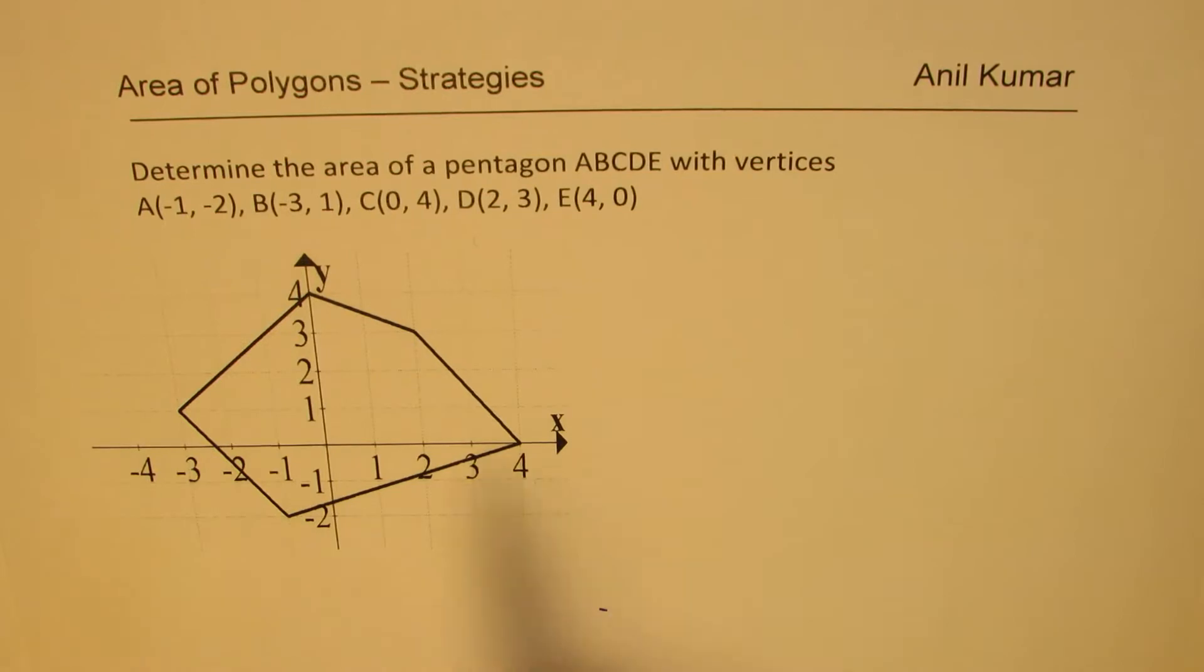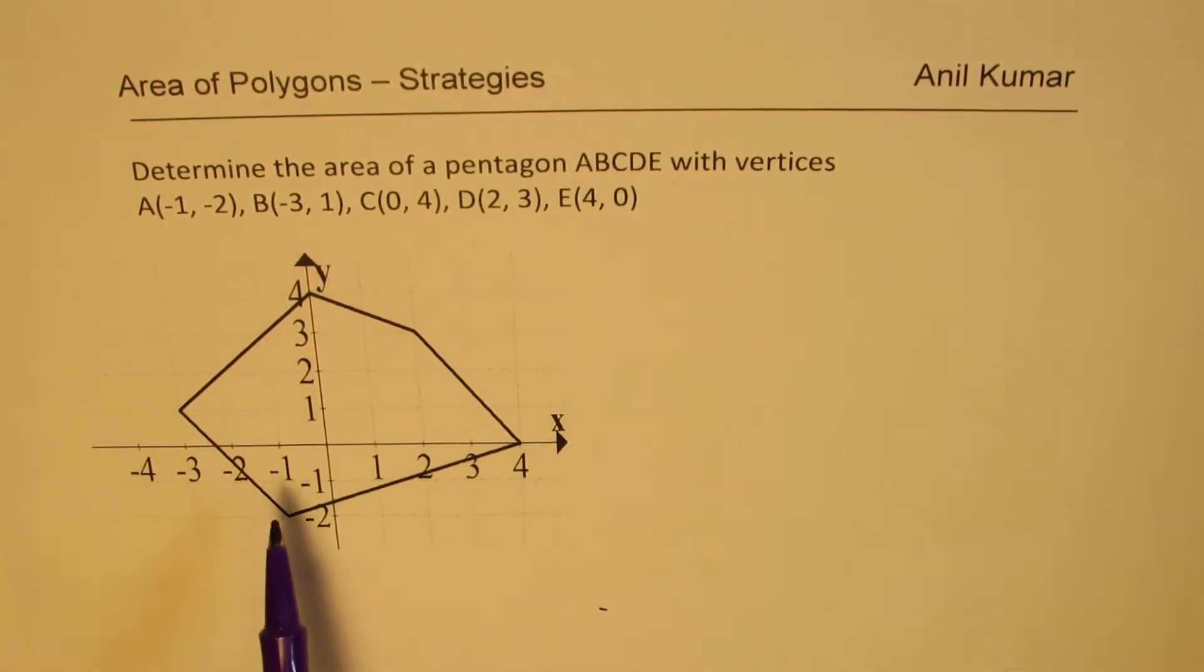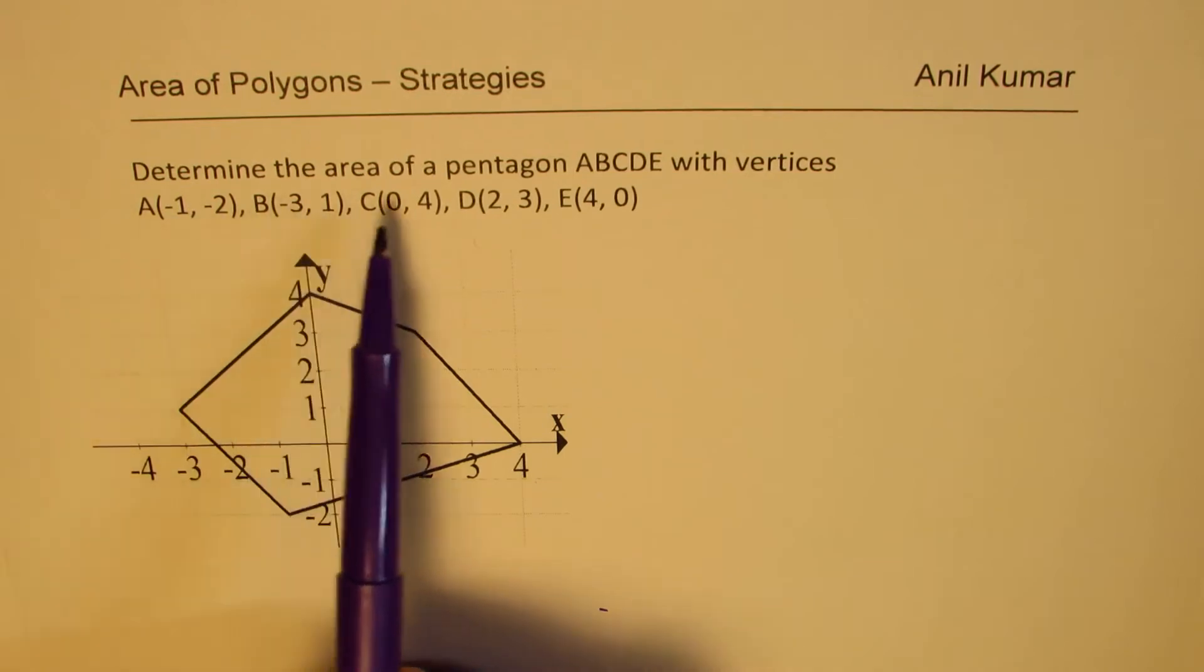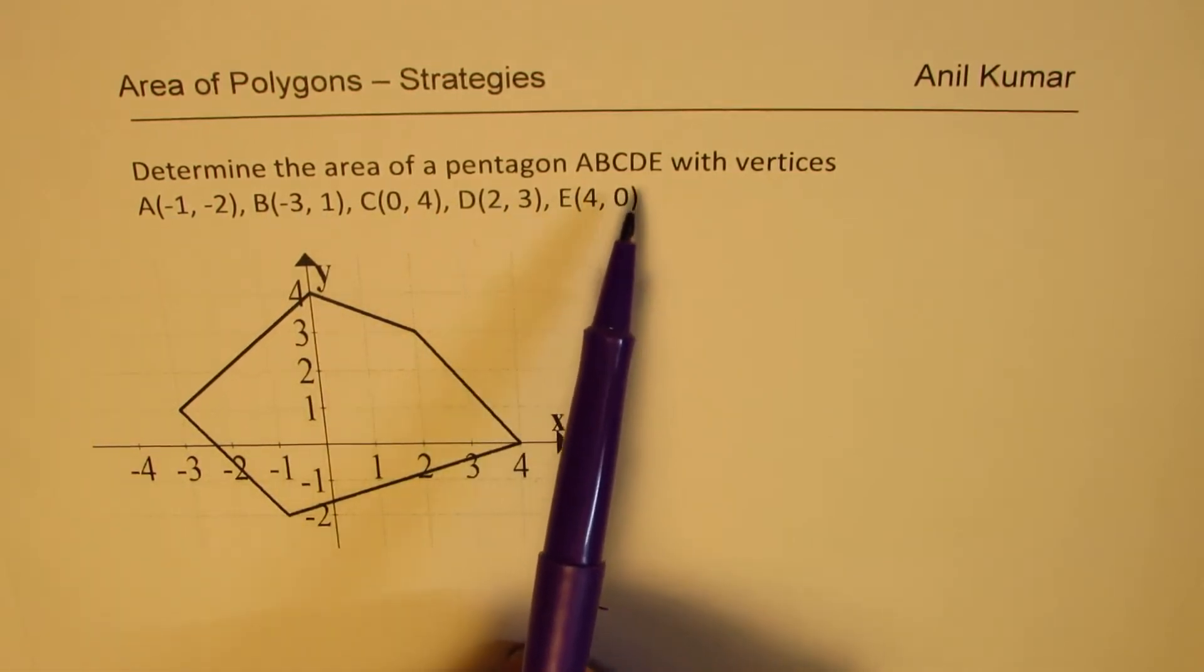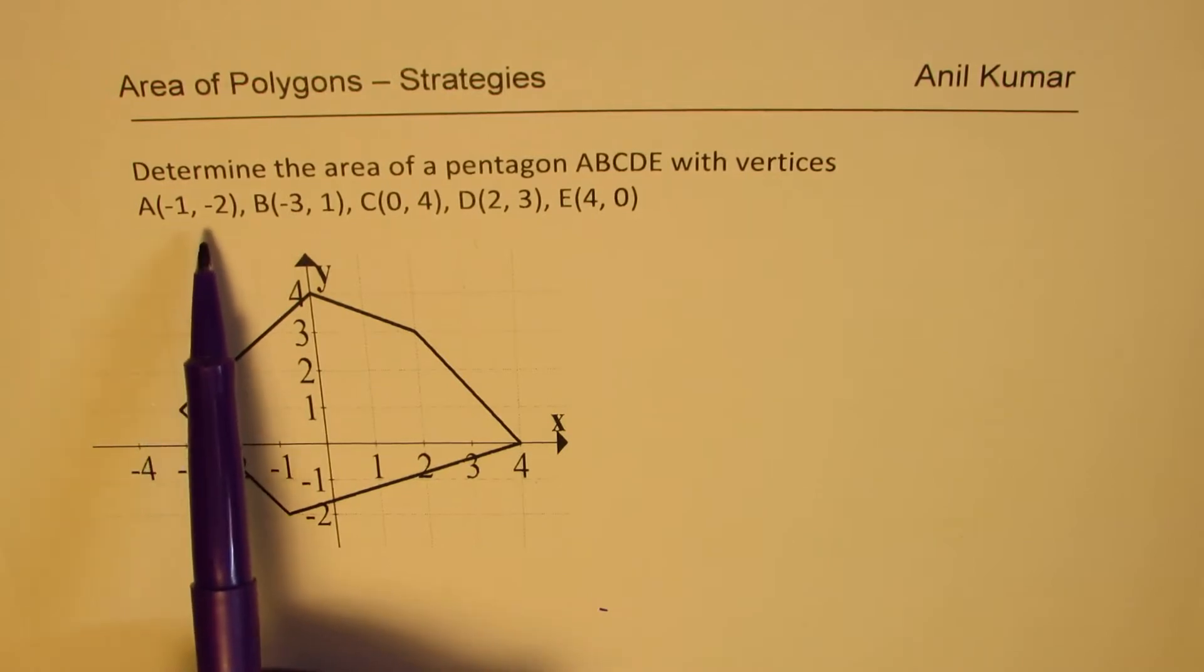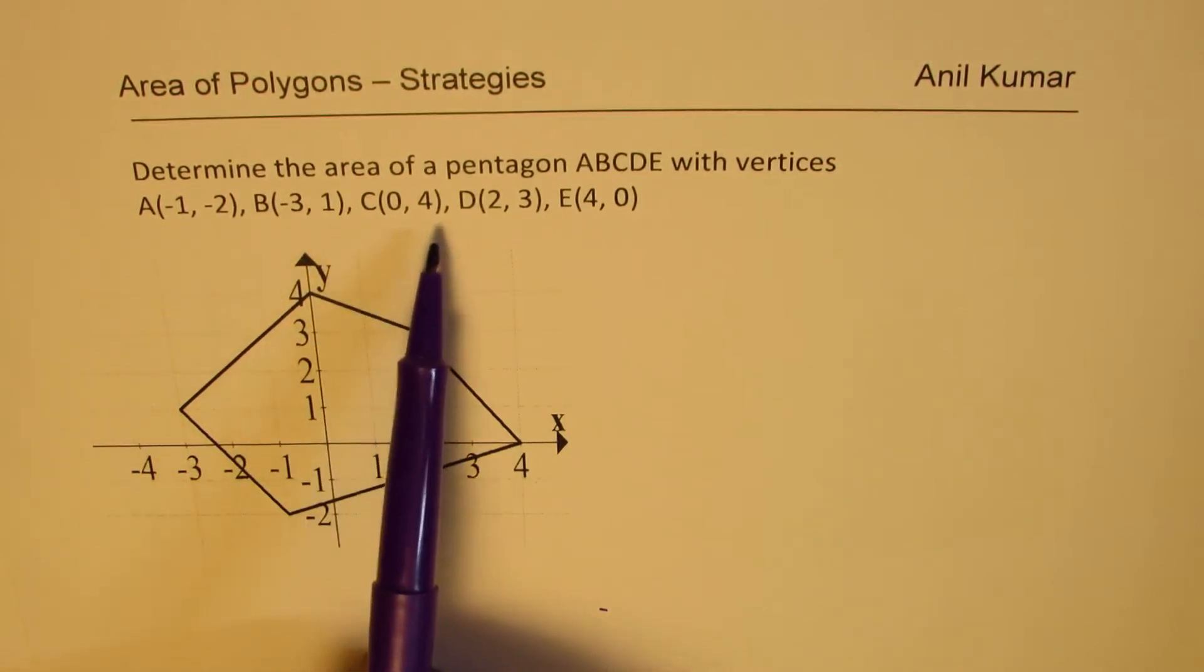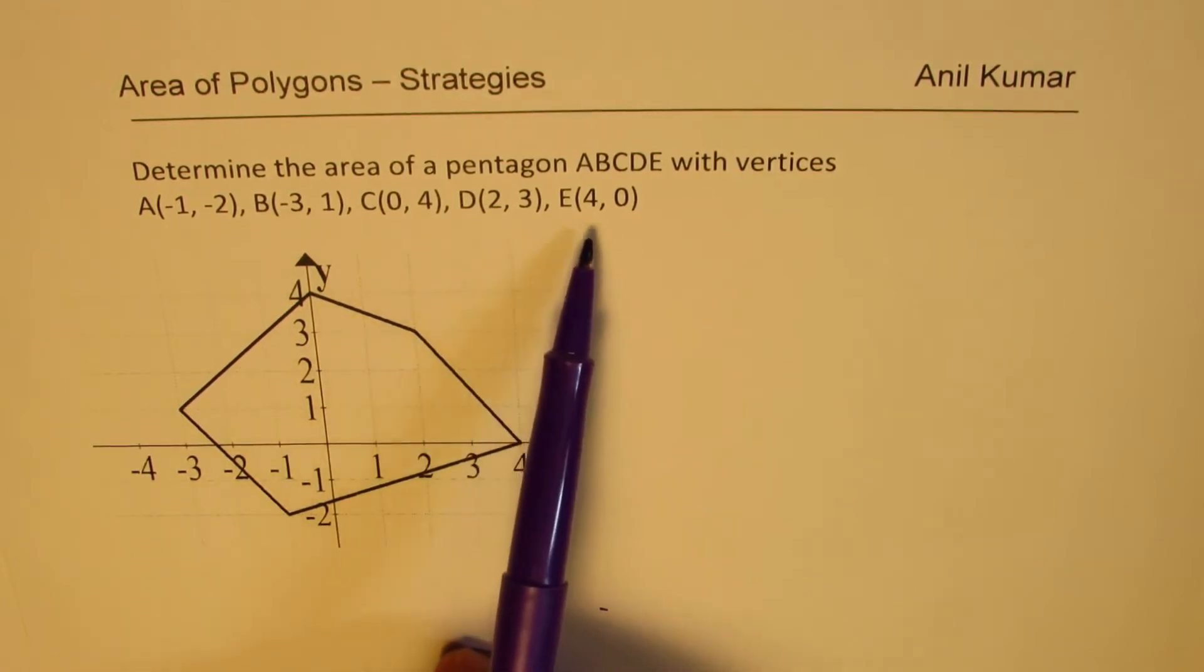As an example, I've taken up a pentagon and we'll see how to find area of this pentagon in two different ways. The question here is, determine the area of pentagon ABCDE with vertices A(-1, -2), B(-3, 1), C(0, 4), D(2, 3), and E(4, 0).